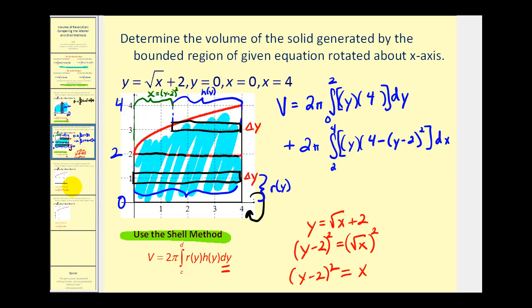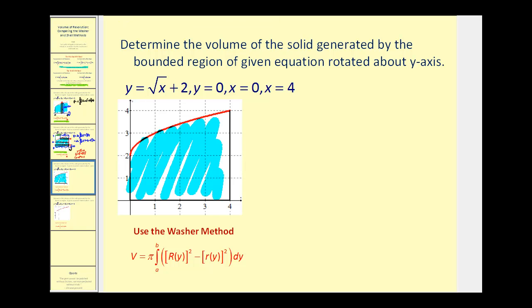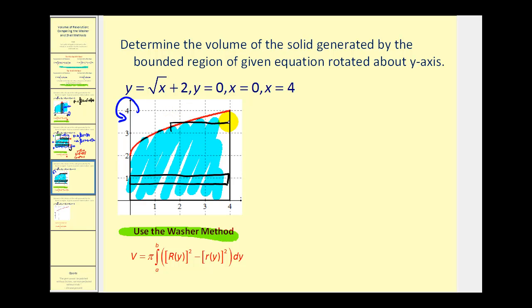It's the same region, but now we're rotating about the y-axis. We'll first use the washer method, which means the rectangle is perpendicular to the y-axis. We have the same issue here because if we drew a rectangle in the lower region, it's bounded by two vertical lines. But above y equals two, it's bounded by the function and one vertical line. That tells us we'll need two different definite integrals. These rectangles have a height of delta y, so we integrate with respect to y.